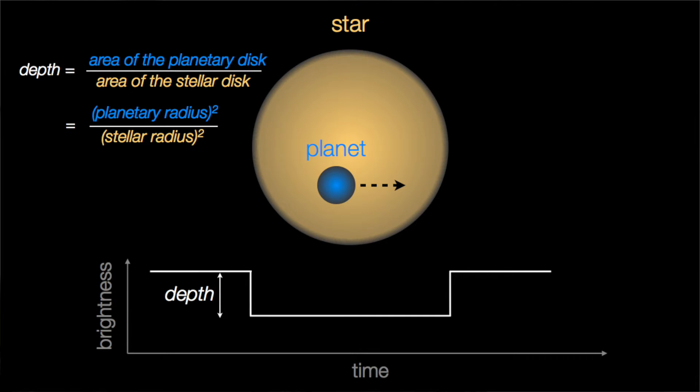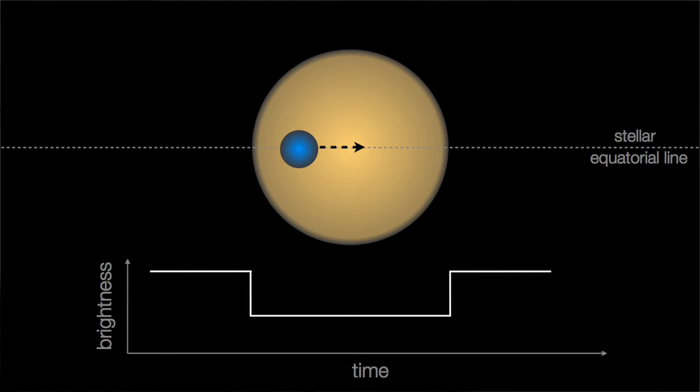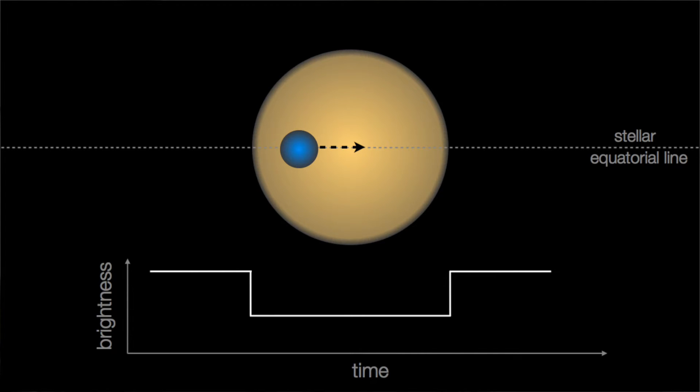The depth of the transit is pretty easy to work out. It's basically the area of the planet's disk divided by the area of the star's disk. So that's just really telling us how big this planet is. Now the duration of the transit is a bit trickier to do. So to simplify things, let's imagine that the planet traverses along the equator of the star. The time it takes the planet to go from one side of the star to the other is going to be the distance divided by velocity. In this case, the distance the planet has to traverse is the diameter of the star itself, or equivalently twice the radius of the star.